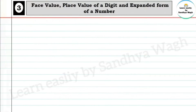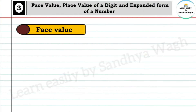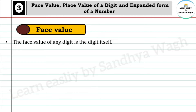Let's begin with face value. As the name suggests, face means how the number looks — that is its face value. The face value of any digit is the digit itself.